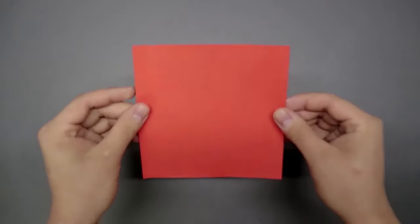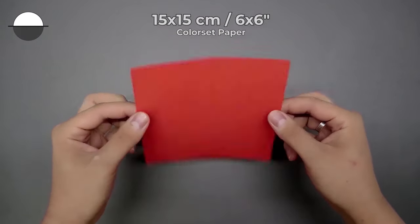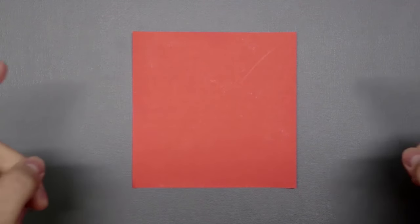The only required material is a square of paper. If it has two colors, it starts with the main color facing down. Well, first of all, we have to divide this square into thirds.